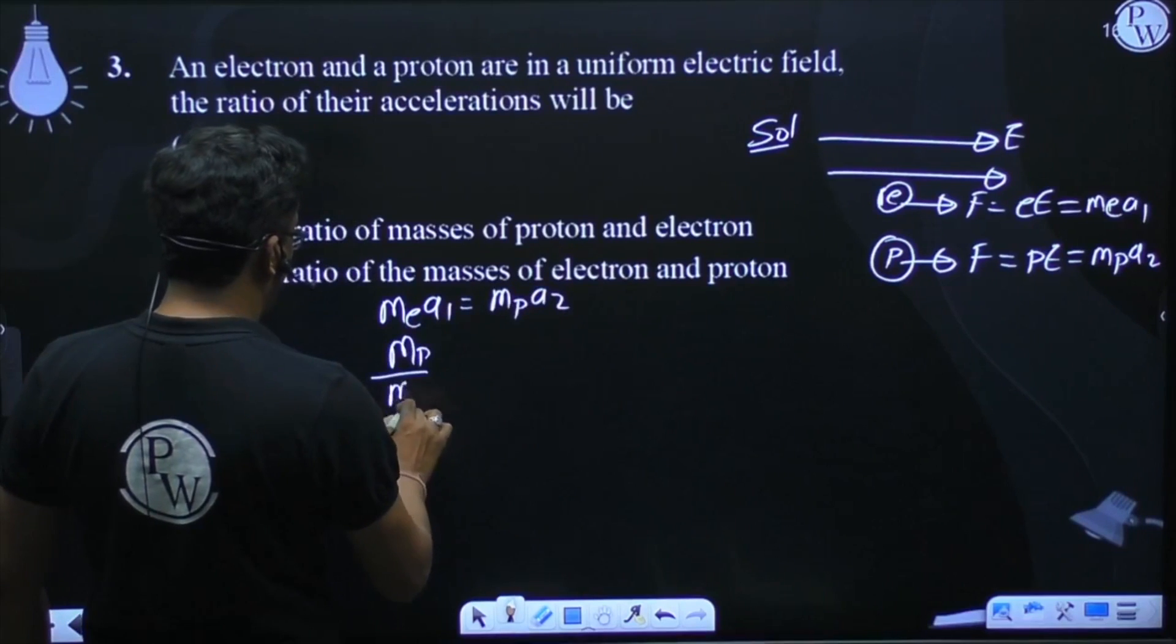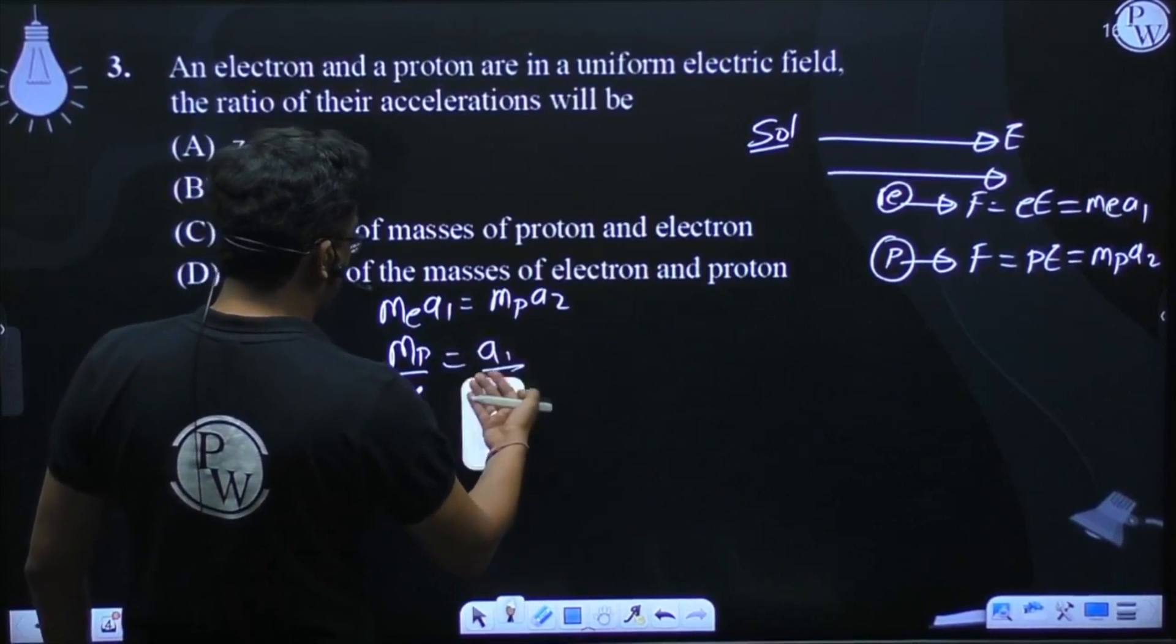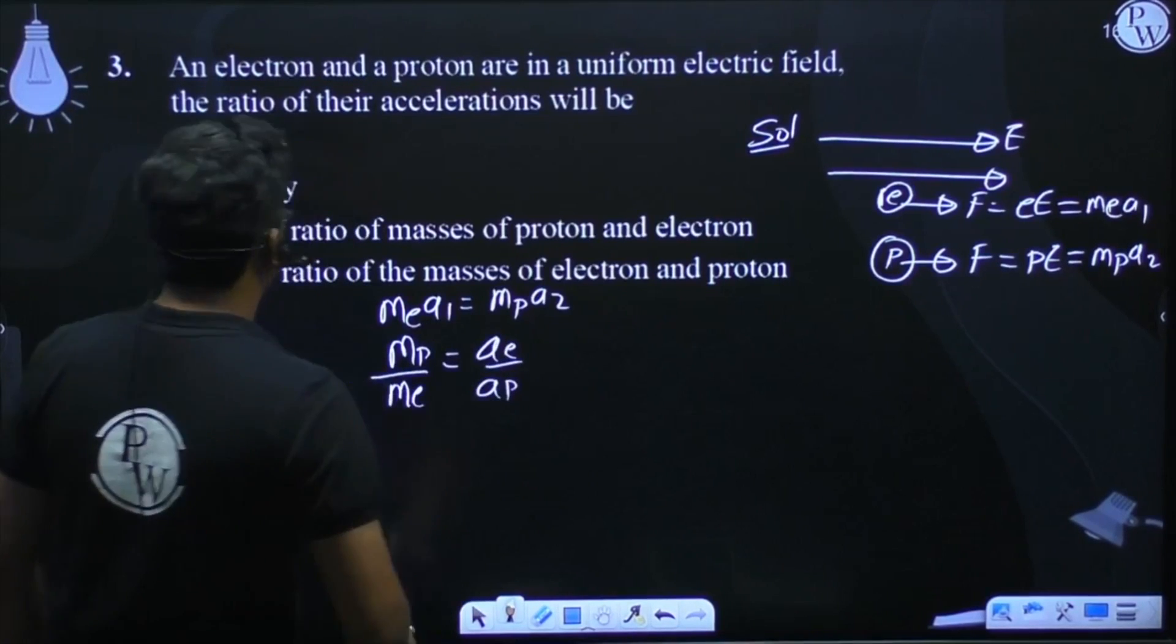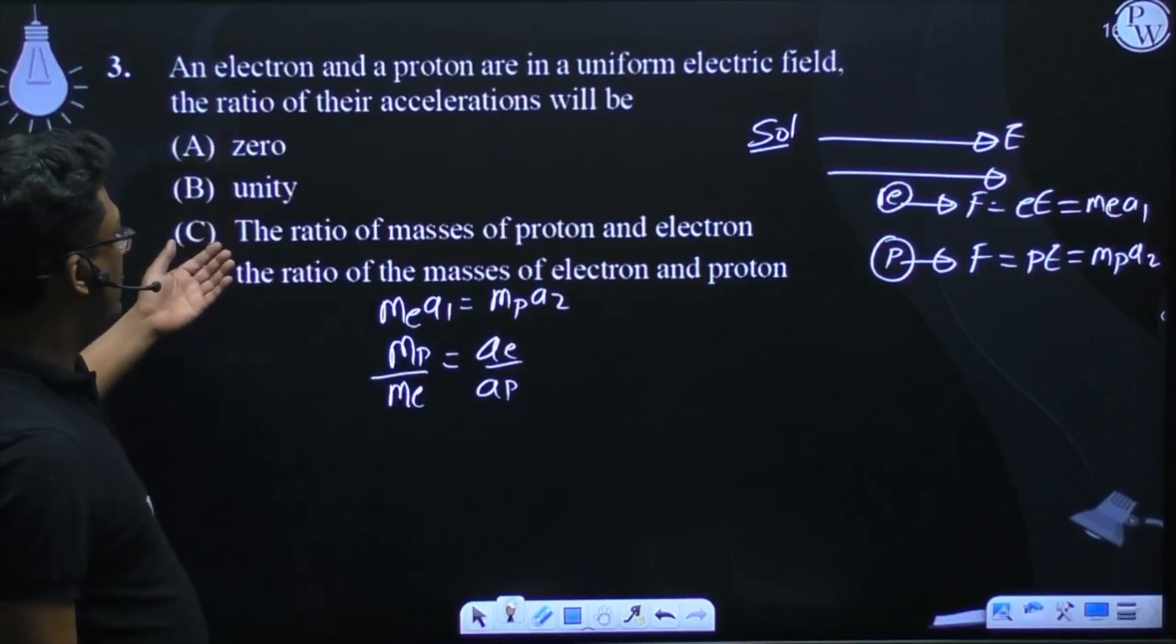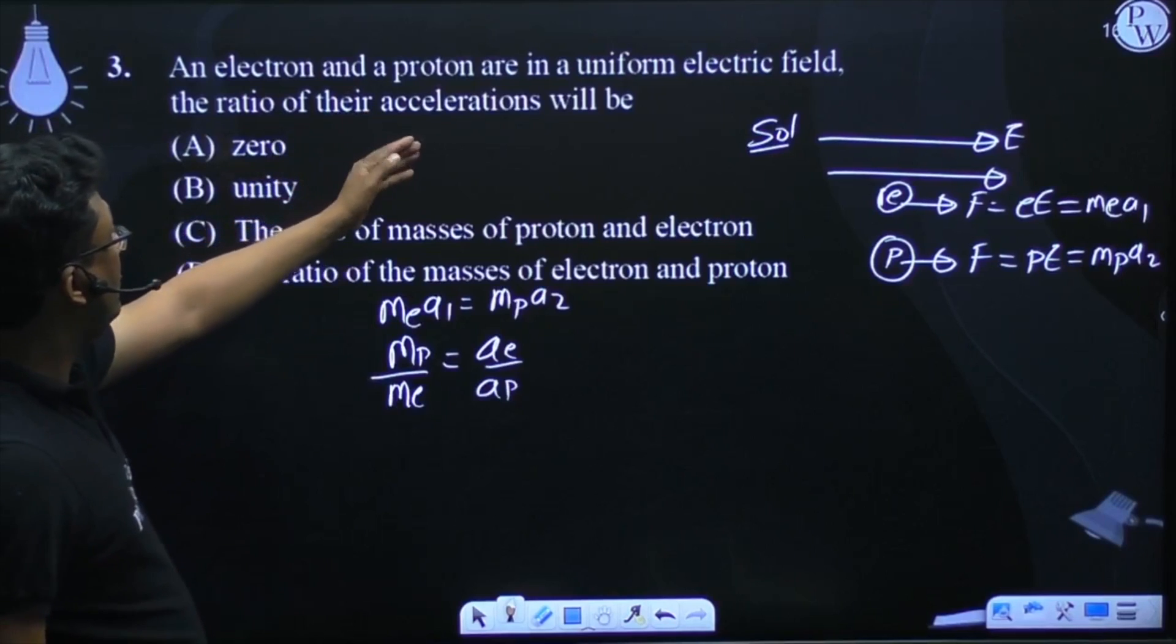Mp by Me is equal to ae by ap. So the ratio of accelerations, electron to proton,